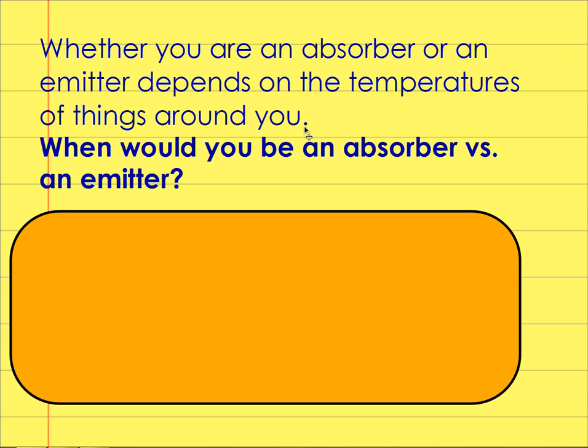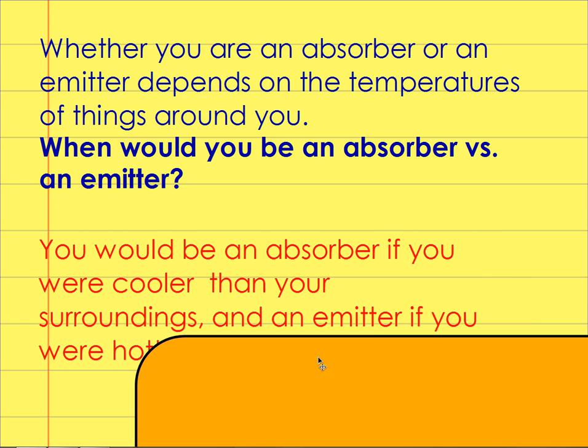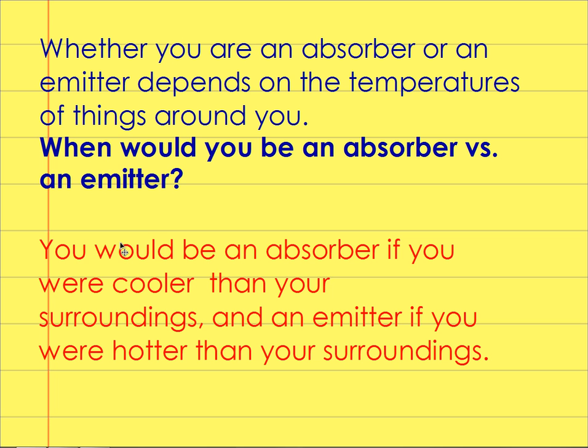You're either an absorber or an emitter depending upon the temperature of everything around you. When would you be a good absorber? When would you be a good emitter? When you're in a cold room, you're an absorber when you're cooler than your surroundings. So if you're in a sauna, you're absorbing heat.